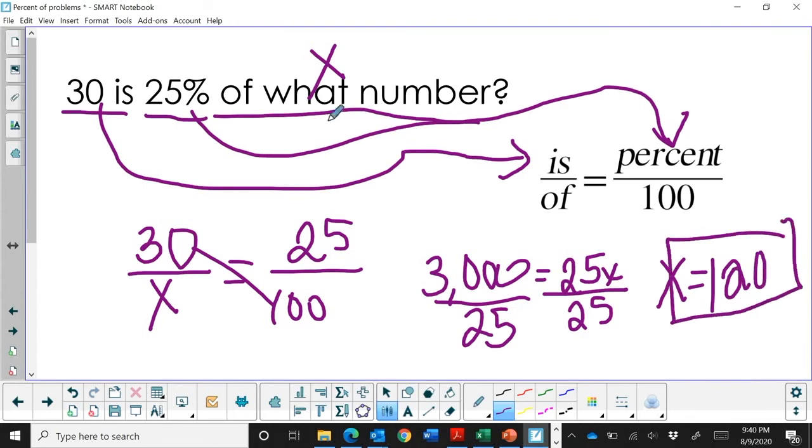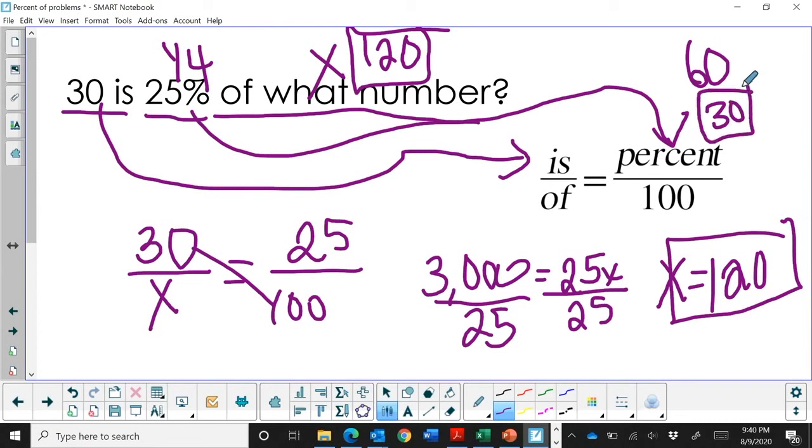So 30 is 25% of 120. 25% is one fourth of its value. If you take 120 and divide it in half, that gives you 60, which is 50%. If we divide 60 in half again, that gives us 30, which is 25%, which is what our problem is telling us.